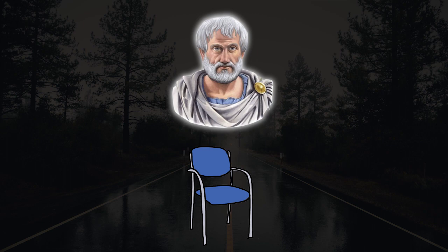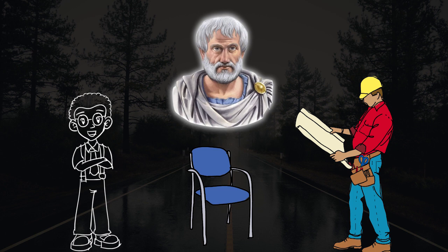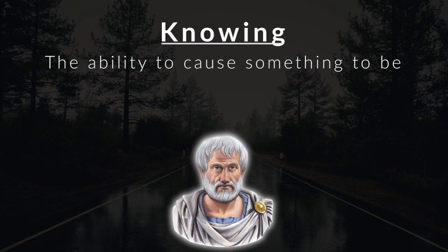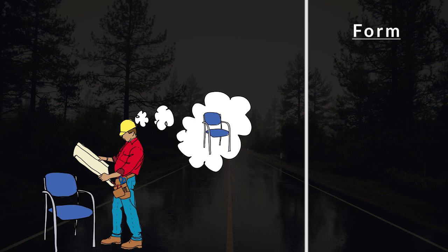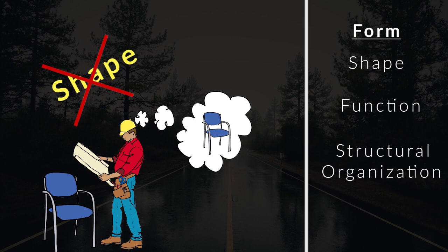Who do you think knows more about a chair? Someone who can tell you every single fact about chairs, or someone who can make you a chair? Aristotle's form of knowing is the ability to cause something to be. He felt that when you know something, you share that same form in your mind. The carpenter has the form of a chair. Not just the shape, but this gestalt. He has the shape, function, and structural organization of a chair in his mind.